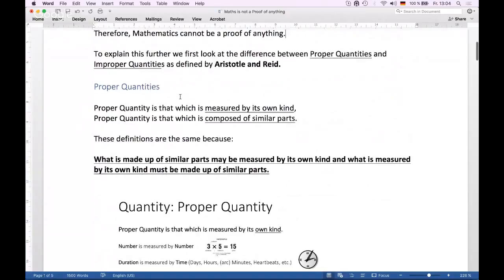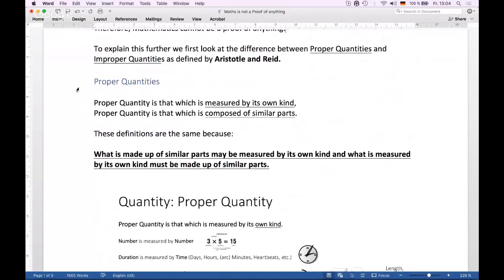So the first bit is just a recap of what is a proper quantity. The best definition that I can find is this one: that which is measured by its own kind, and that which is composed of similar parts. And these definitions are the same because what is made up of similar parts may be measured by its own kind, and what is measured by its own kind must be made up of similar parts.